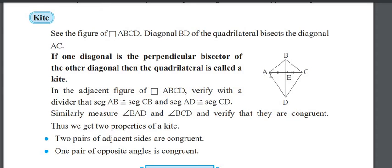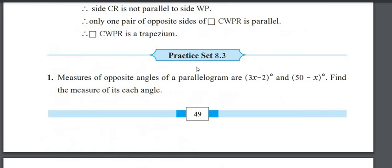So angle A and angle C are the congruent angles in the kite.